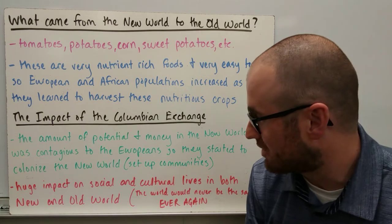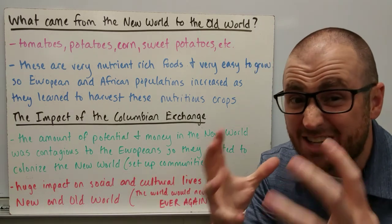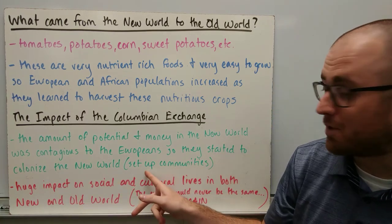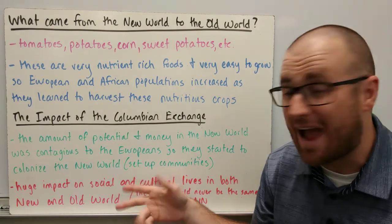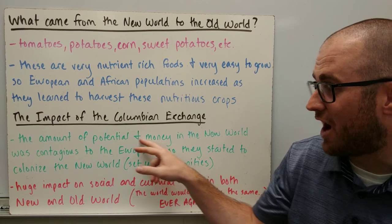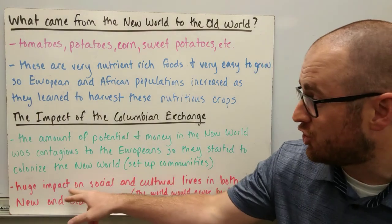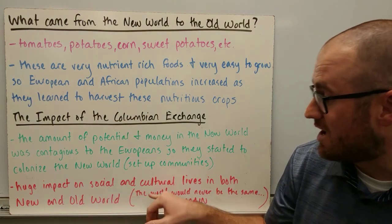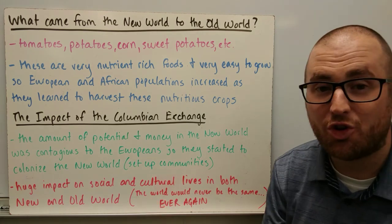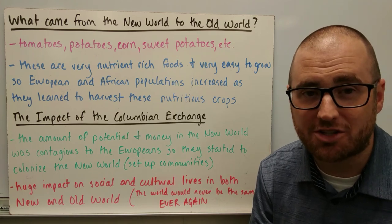Let's talk about the impact of the Columbian Exchange. The amount of potential and money in the new world was contagious to the Europeans, so they started to colonize — setting up communities, governments, towns, and ways to live over there. They colonized because they just could not turn down the opportunity for this much control, this much land, this much money. It also had a huge impact socially and culturally in both the old world and the new world. The world would never be the same ever again because of the Columbian Exchange.